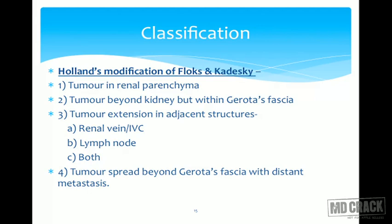Based on CT scan, we can stage the disease. The classification used is Robson's modification (Holland's modification of Flocks and Kadesky). It classifies RCC into four main stages. Stage 1: tumor limited to renal parenchyma. Stage 2: tumor beyond the kidney but still limited within the Gerota's fascia. Stage 3: tumor extension into ipsilateral renal vein or IVC, lymph nodes in the renal vicinity, or both. Stage 4: tumor spread beyond the Gerota's fascia with distant metastasis.